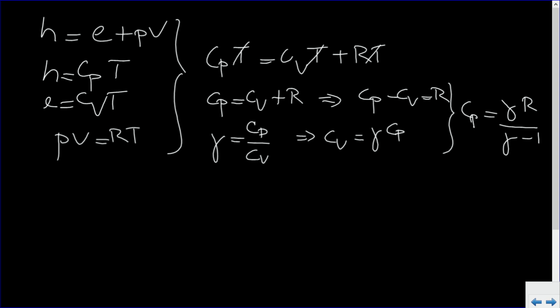So now we have an expression for CP in terms of gamma and R. We had the equation T0 divided by T1 is 1 plus V1 squared divided by 2 CP T1. Now, if we put this CP instead of this CP here...